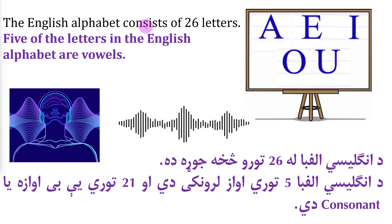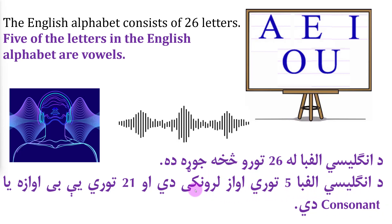The English alphabet consists of twenty-six letters. Five of the letters in the English alphabet are vowels. The English alphabet is a language story — saka joda da. The English alphabet is a language story.